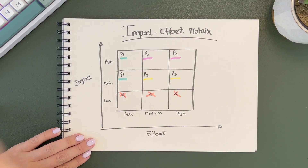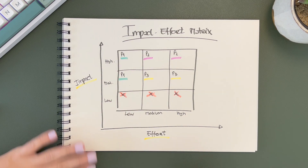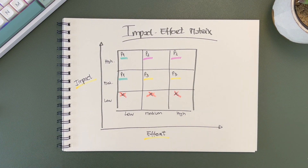Number four, the impact effort matrix, which takes into consideration impact and effort to help you prioritize tasks, projects, or your product roadmap. Today I'm going to show you two different ways to build a matrix framework in Notion using databases — the Eisenhower matrix, which is a two by two matrix, and the impact effort matrix, which is a three by three matrix.